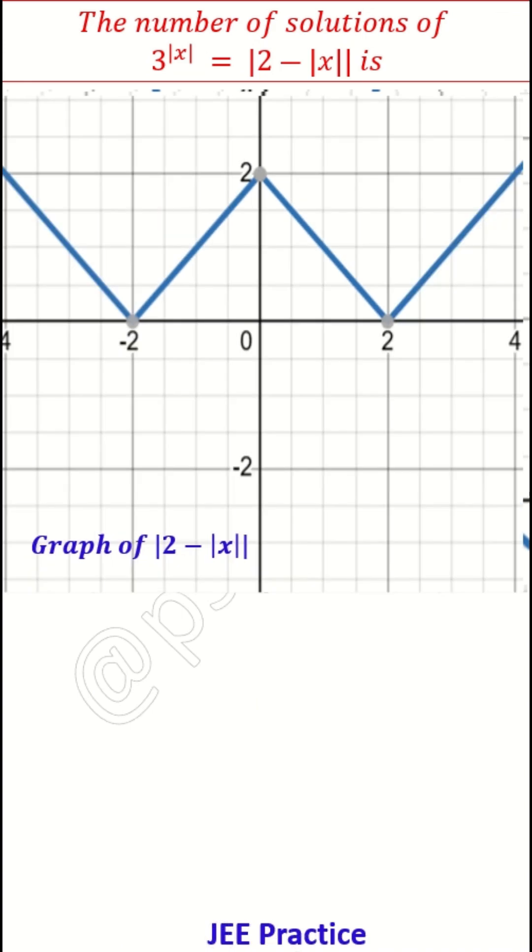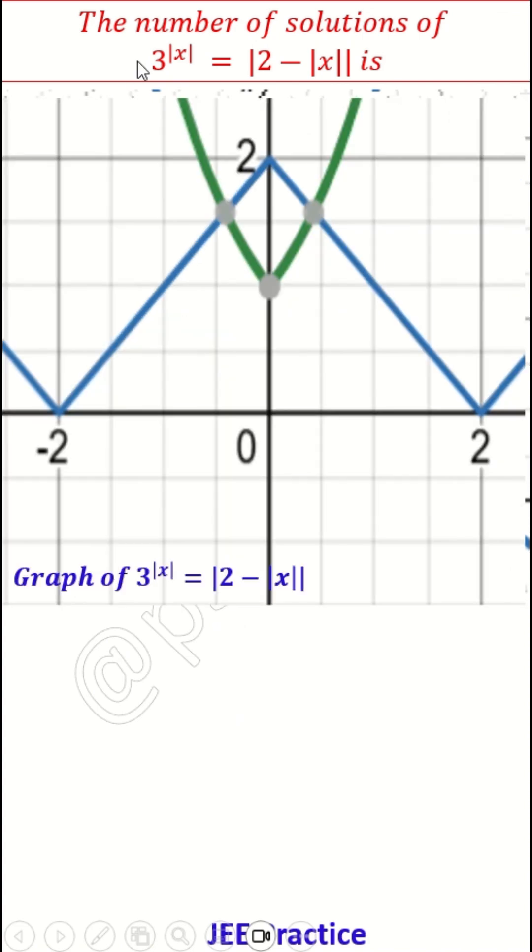Now you have 2 graphs, 3 to the power of absolute x as well as the RHS part you have. Overlap them. You know that other graph is looking at 1 comma 0, it is upwards, well upwards. So it looks like this. We very clearly can see that there are 2 solutions possible. So number of solutions is 2.